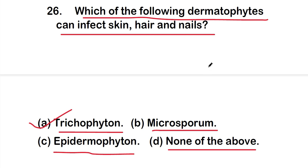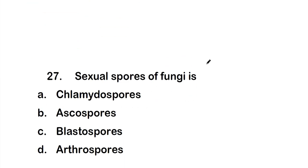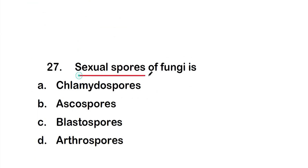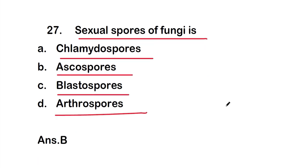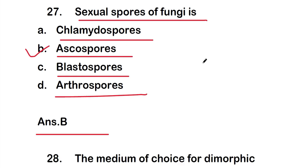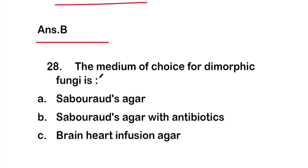Question 27: Sexual spores of fungi are option A - chlamydospores, option B - ascospores, option C - blastospores, or option D - arthrospores. The right answer is option B, ascospores. Ascospores are the sexual spores of fungi.